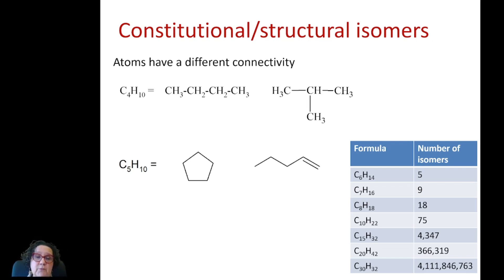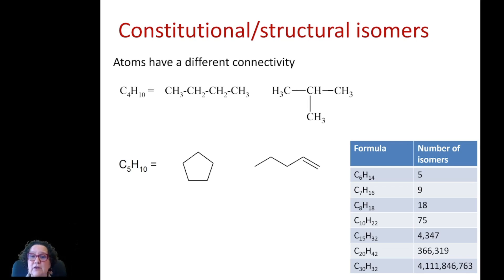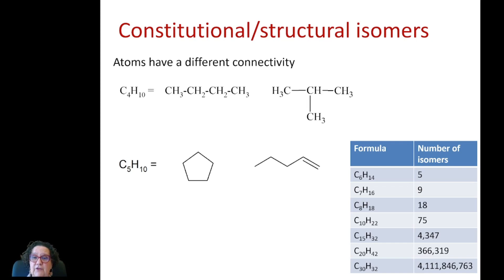The more carbons and hydrogens you've got, the more possibilities of isomers you can have just by arranging them differently. For example, if you have 6 carbons and 14 hydrogens, you could have up to 5 different isomers.